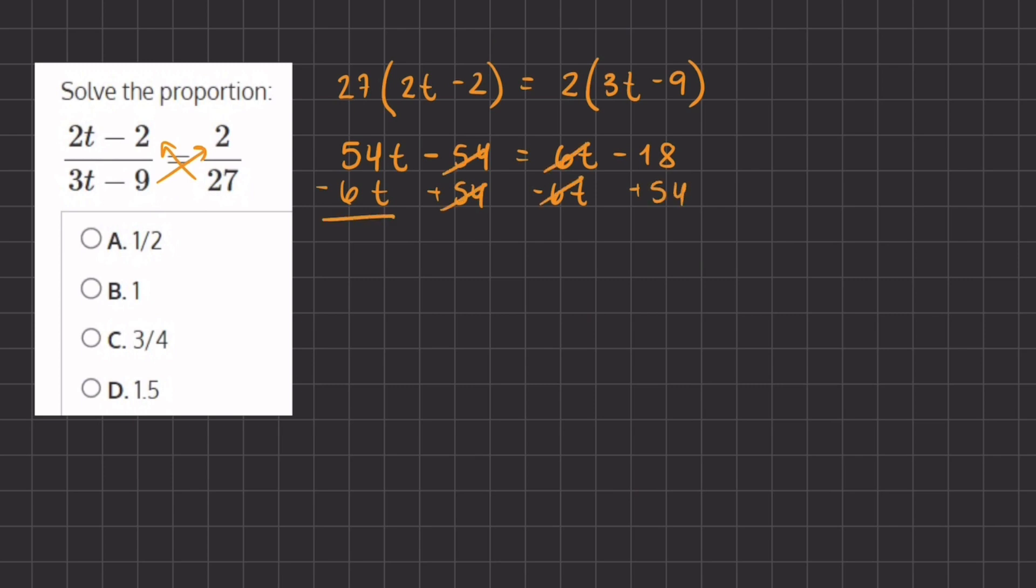We have 54t minus 6t which gives us 48t, and this equals negative 18 plus 54 which gives us 36. So 48t equals 36.